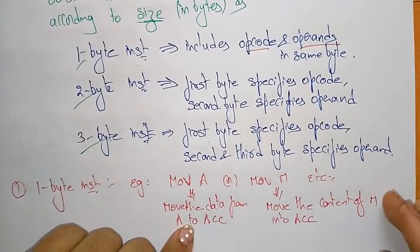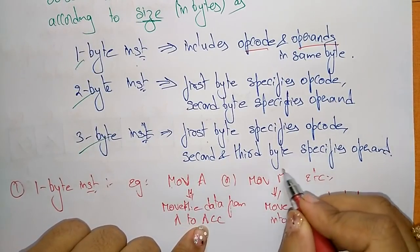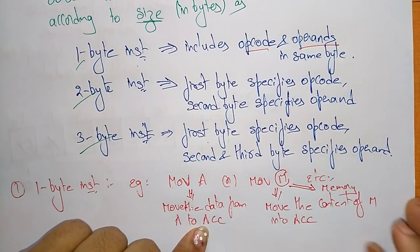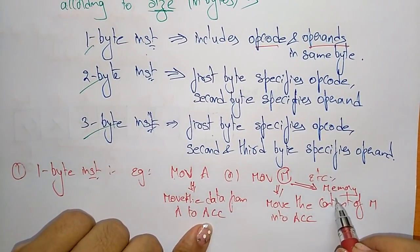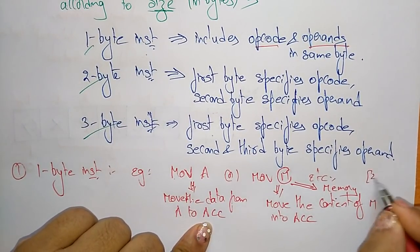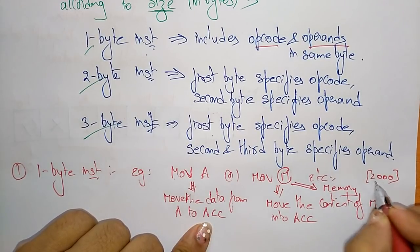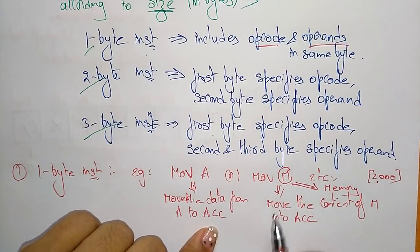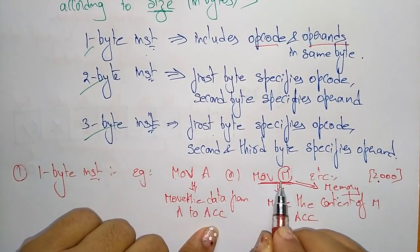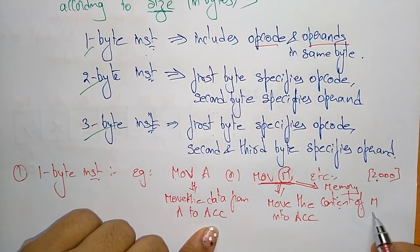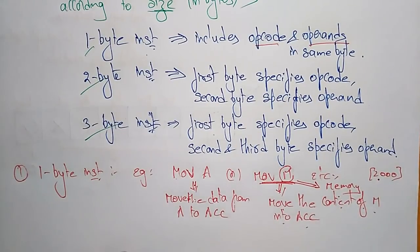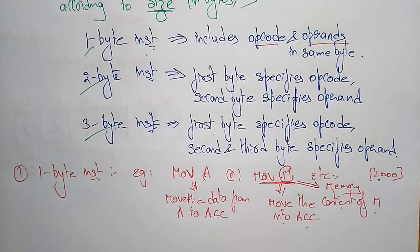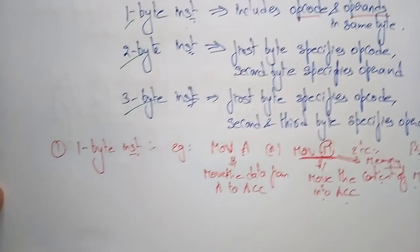Why do I say 'the content of M'? M is nothing but memory — you call it memory. In that memory address, some data is present, and that data has to be moved to the accumulator. That is the meaning of that instruction: move the content of M into the accumulator. So A represents a register, whereas M represents the memory. This is a one-byte instruction.